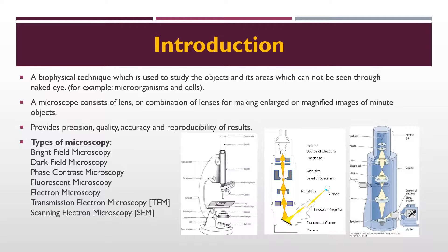A microscope consists of a lens or combination of lenses for making enlarged or magnified images of minute objects. The ability of a microscope is to detect, resolve, and image the smallest items of evidence, often without any destruction or alteration. The aim of any microscope is to magnify images of a small object and to see the fine details. Types of microscopy include bright field, dark field, phase contrast, fluorescent, transmission electron, and scanning electron microscopy.